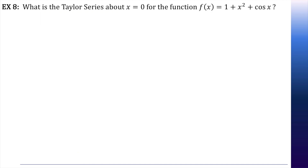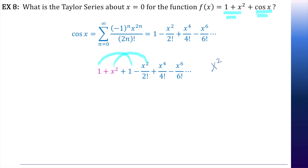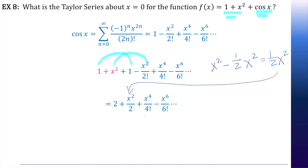Example 8: what is the Taylor series about x equals zero for the function 1 plus x squared plus cosine x? Let's start with what we know — the series for cosine of x — and just add 1 plus x squared to it. When you do that, there are like terms that can be combined. How do you combine x squared and negative x squared over two factorial? Well, x squared minus one half x squared gives us one half x squared. So the first four terms of this series are two plus x squared over two, then x to the fourth over four factorial, x to the sixth over six factorial, and so on.